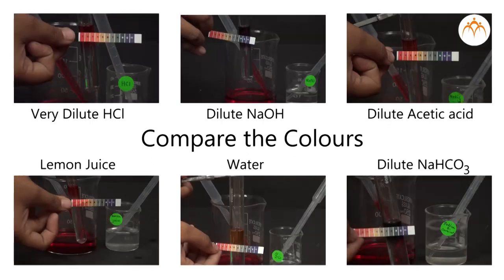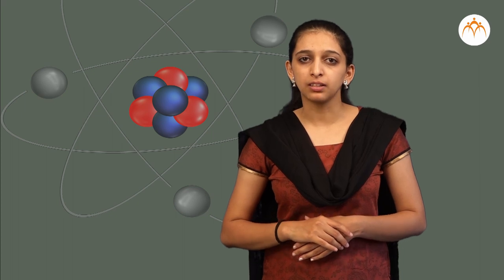We compare the colors with the color shade on the universal indicator bottle. From this, we determine the pH of each solution and note them in the observation table.